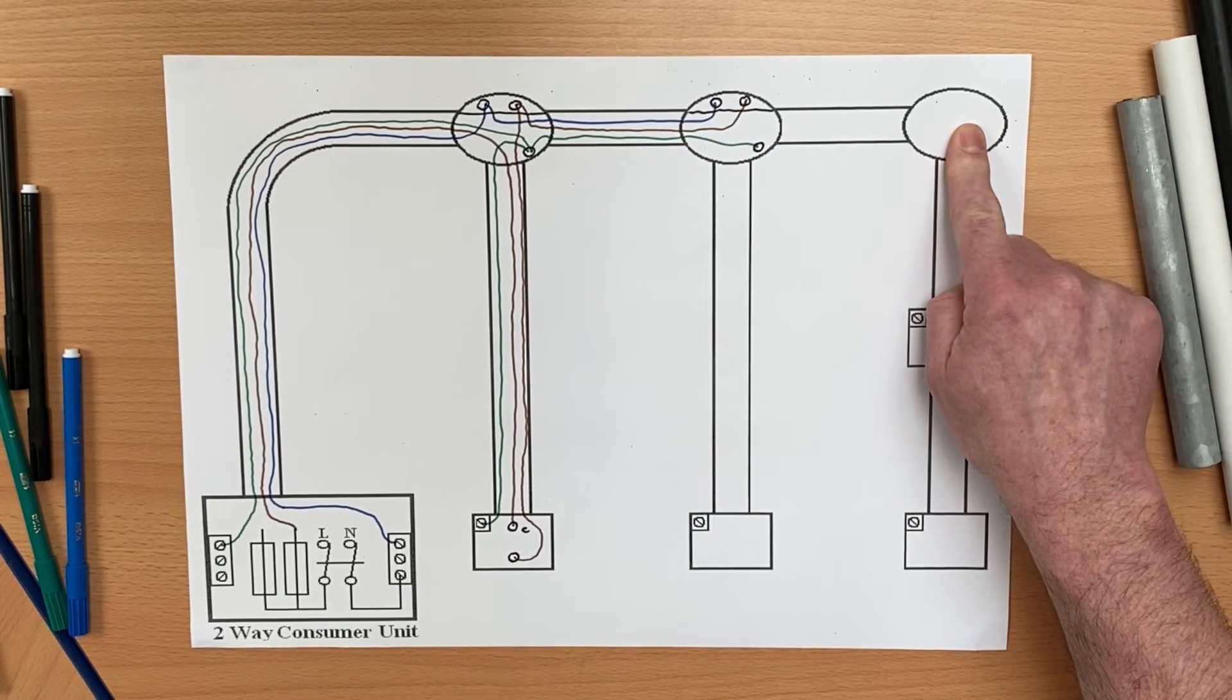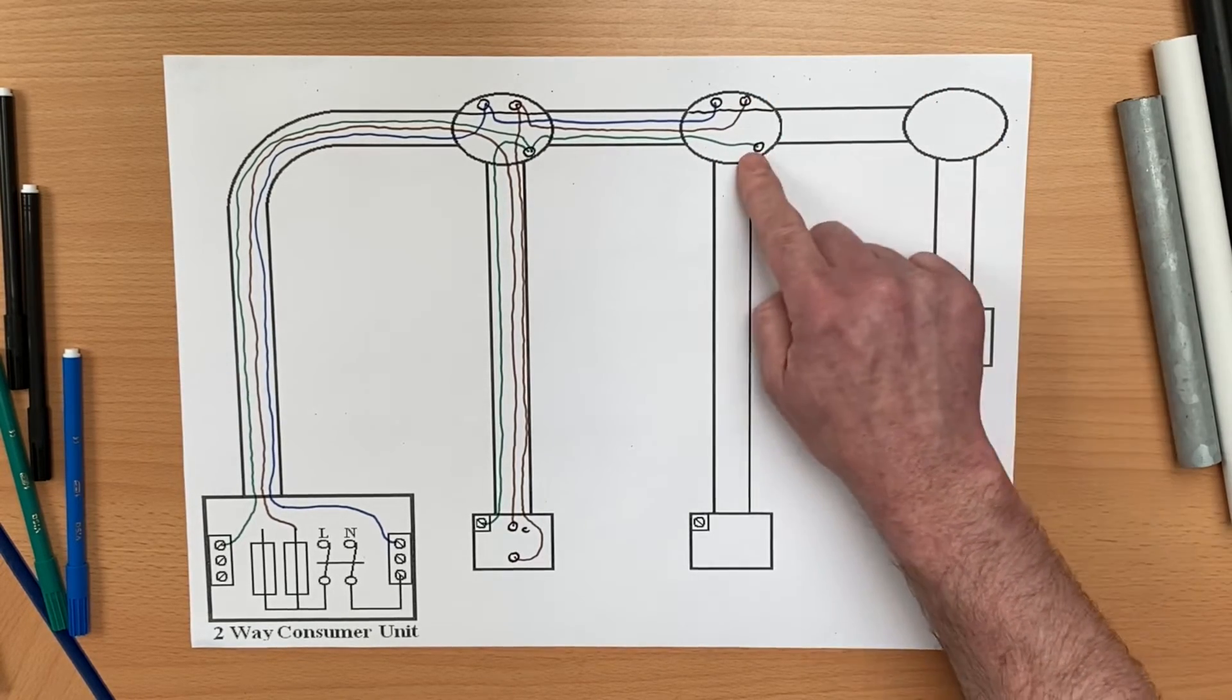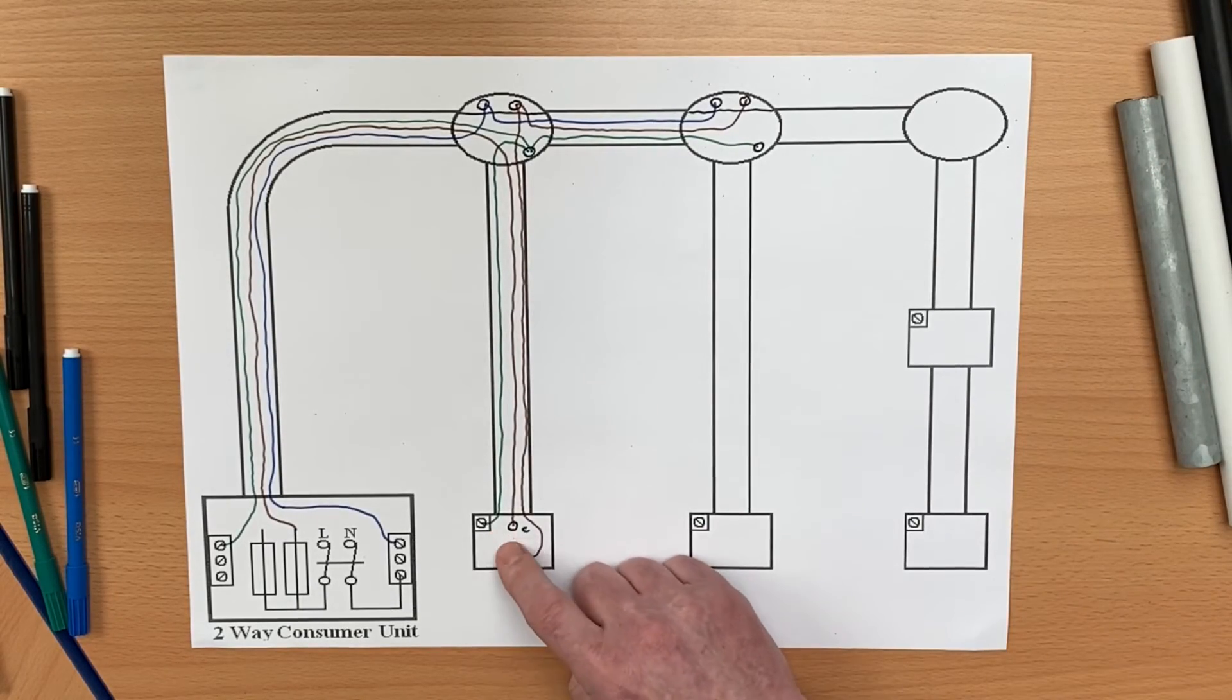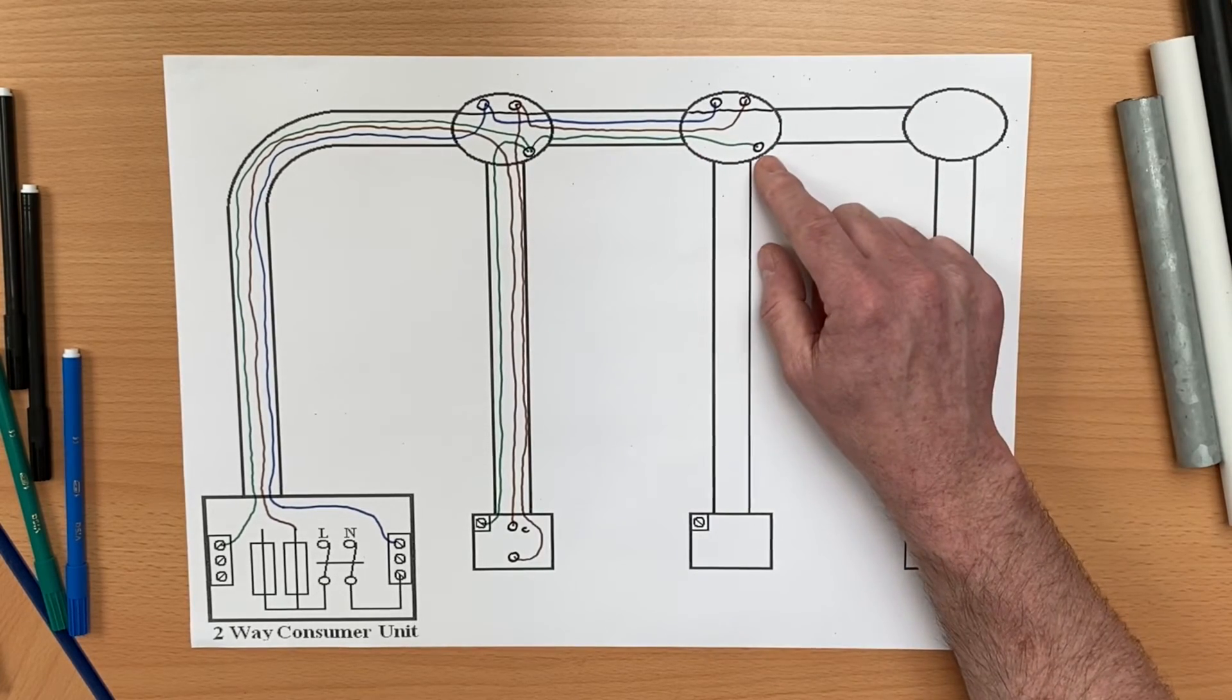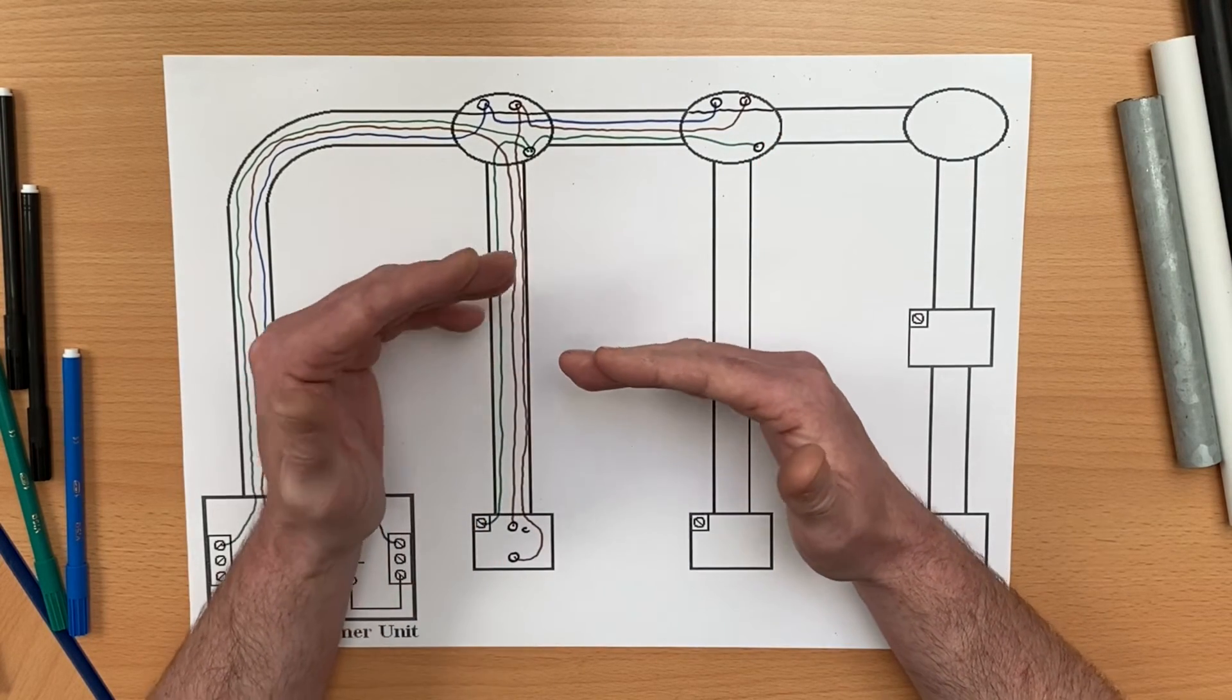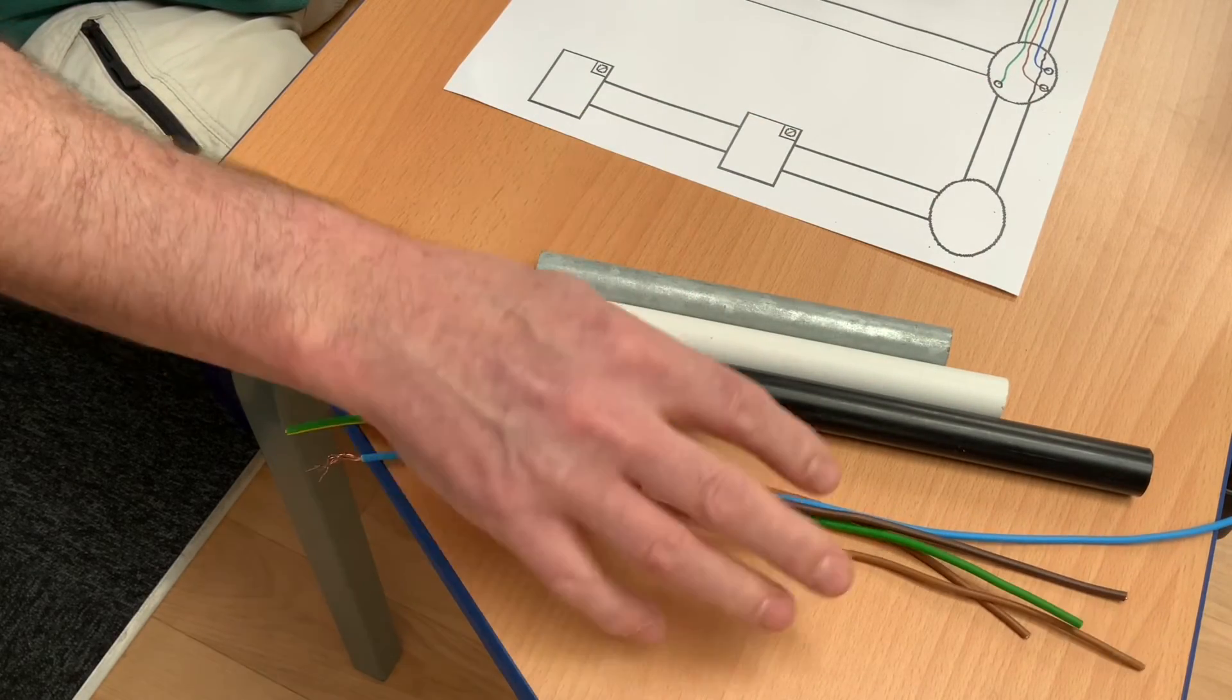It might be that you want more lights. How do we do that? We continue the process on. Let's say we were putting this light on as well. We drop a neutral across, the switching line across, and the CPC across in these PVC single cables to the next lighting point, meaning that this switch will turn on this light, this light, and the process can continue. This is building on the knowledge from previous videos in this series using the conduit looping method.